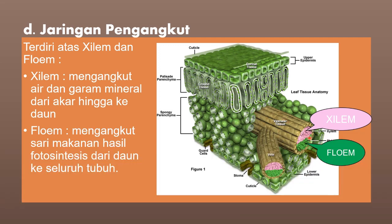Ini adalah contoh jaringan pengangkut yang terdapat pada organ daun, dan ini hanya dapat dilihat jika menggunakan mikroskop. Bagian yang berwarna merah muda atau pink ini merupakan gambar dari jaringan silem, sedangkan yang warna hijau di bawahnya merupakan gambar dari jaringan phloem. Kedua jaringan ini biasanya letaknya berdekatan, tetapi memiliki fungsi yang sangat berbeda.